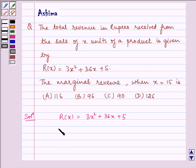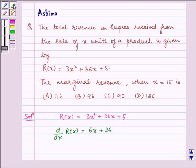Now differentiating R(x) with respect to x, we get d/dx of R(x) = 6x + 36. Here we have to find the marginal revenue when x equals 15.